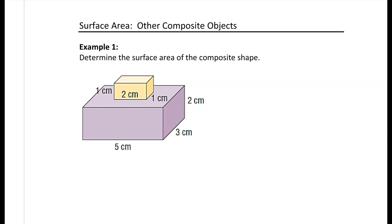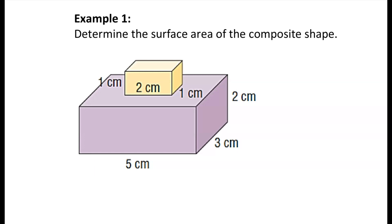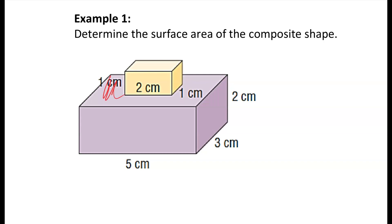Looking at the next shape, we have two rectangular prisms again, but they are of different sizes. That means the overlap is going to affect us differently — it's not going to be the total top face of the larger prism, but rather the total bottom face of the smaller shape sitting on top. That is what we're going to have to remove, and we have one overlap, which is two faces.